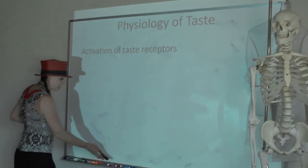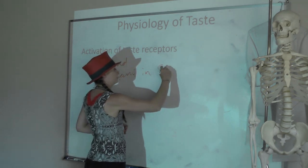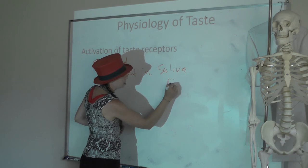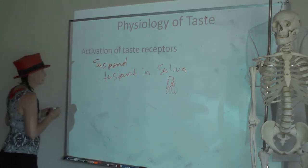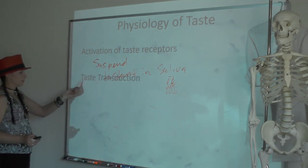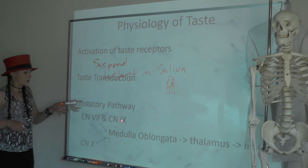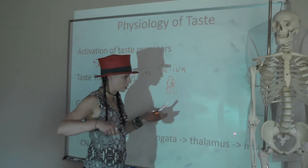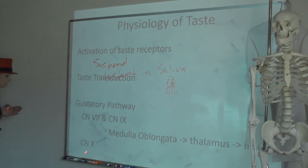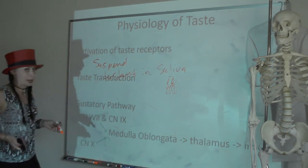To activate taste receptors, a tastant is suspended in saliva that drops into the taste pore and activates gustatory cells, converting to an action potential by opening cation channels. The facial and glossopharyngeal nerves are the first-order neurons synapsing in the brainstem; second-order neurons synapse in the thalamus; third-order neurons synapse in the insula. If vomiting, the vagus nerve communicates to the medulla oblongata, then the thalamus, then the insula.